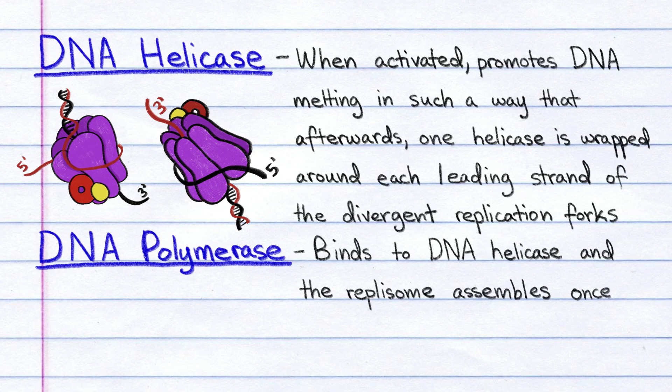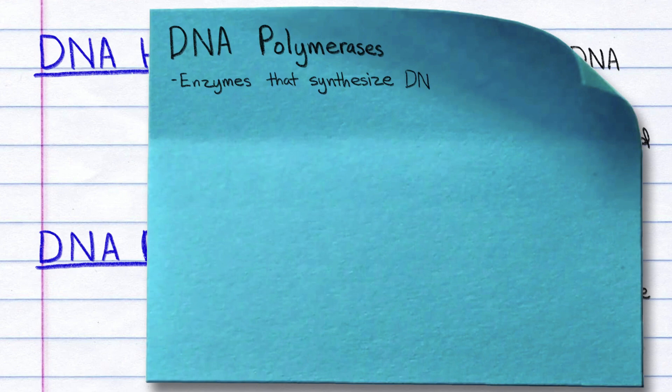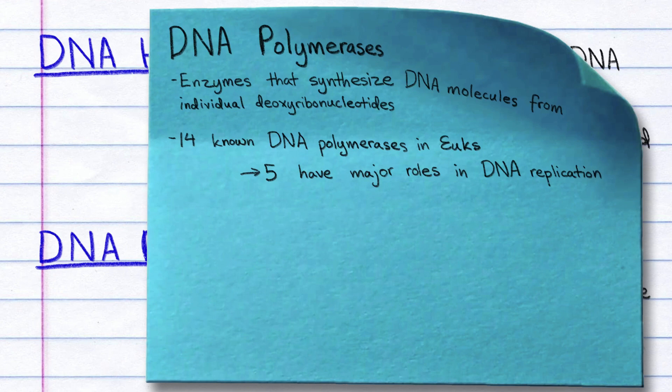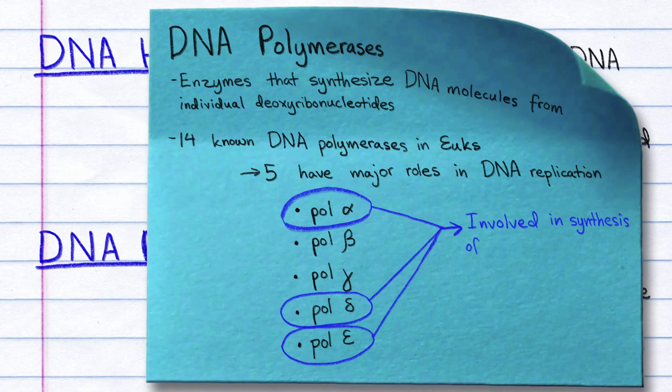DNA polymerases are the enzymes that synthesize DNA molecules from individual deoxyribonucleotides. We know of 14 different DNA polymerases in eukaryotes, and 5 of these have major roles in DNA replication: Pol alpha, pol beta, pol gamma, pol delta, and pol epsilon. Pol alpha, pol delta, and pol epsilon are involved in the synthesis of DNA from a template, termed strand elongation.